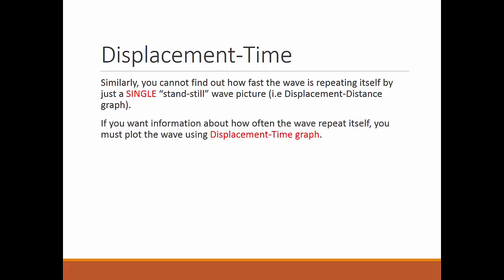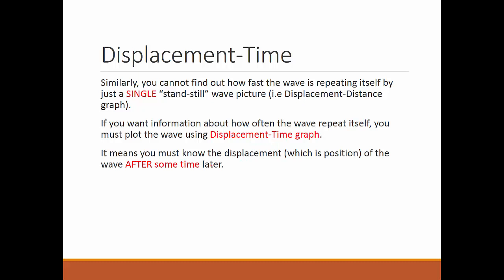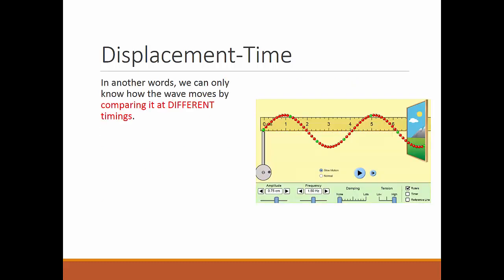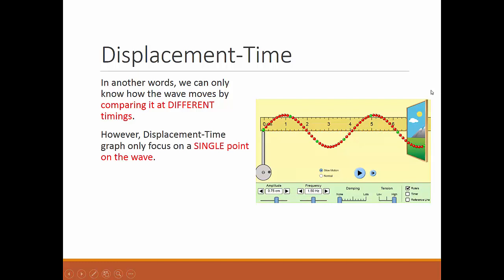So the idea is that you cannot find how fast the wave is repeating itself from just a single standstill wave picture. If you want information about how often the wave repeats itself, you must plot the displacement-time graph. That means you must know the displacement of a point after some time, similar to knowing the position of a running man after some time.